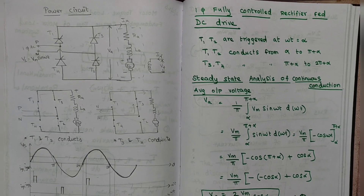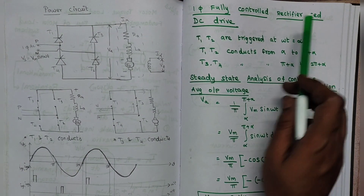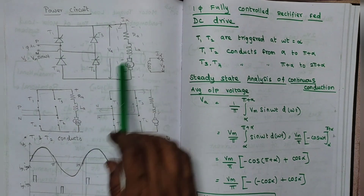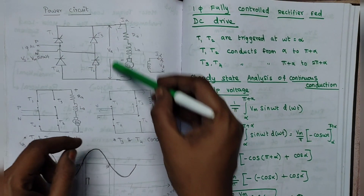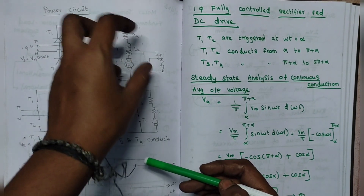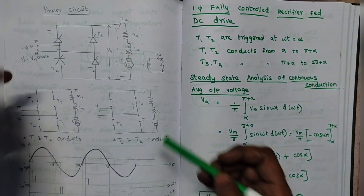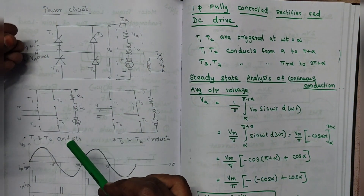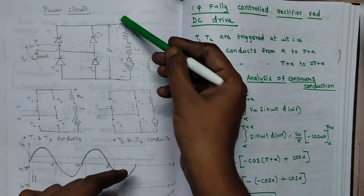Good evening students. Today we are going to see about single phase fully controlled rectifier fed DC drive. This is the circuit diagram for that. This is a motor and we are going to feed the AC supply to this motor. This is a rectifier circuit because input is AC and the output is DC. The motor here is a DC motor.